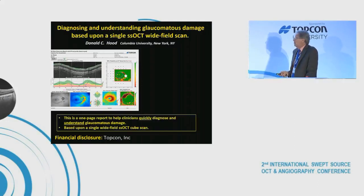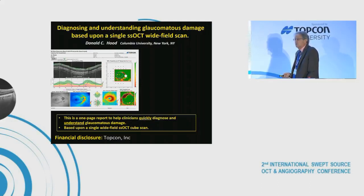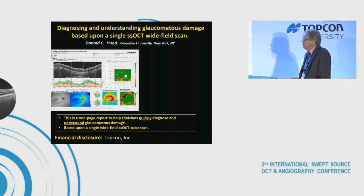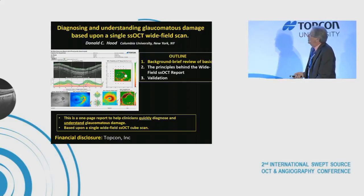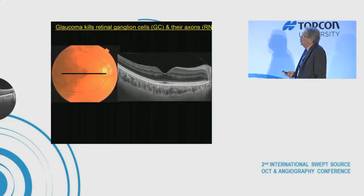After the obligatory financial disclosure — I want to tell you about a one-page report that we've designed with Topcon to help clinicians quickly diagnose and understand the nature of glaucoma and its damage. It's based on a single wide field swept source cube scan. First, some background: glaucoma kills retinal ganglion cells and their axons.